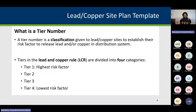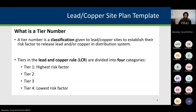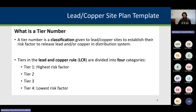So what is a tier number? A tier number is a classification given to lead and copper sites to establish their risk factor for the release of lead or copper into the distribution system. Based on the Lead and Copper Rule (LCR), there are four categories: tier one is the highest risk for the release of lead and copper into the distribution system, and tier four is the lowest risk.